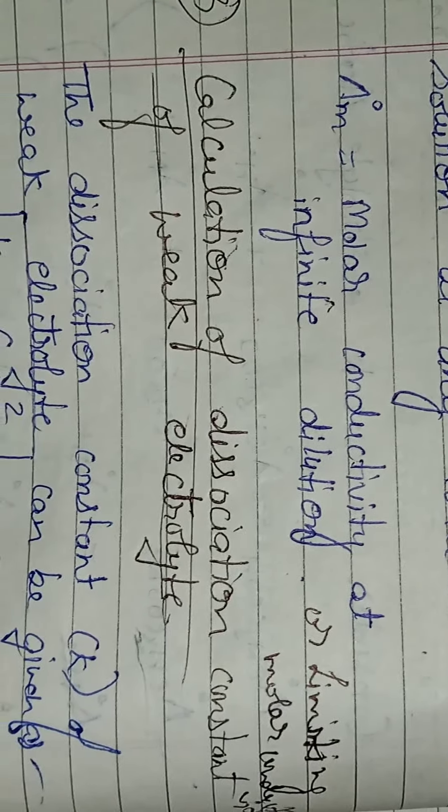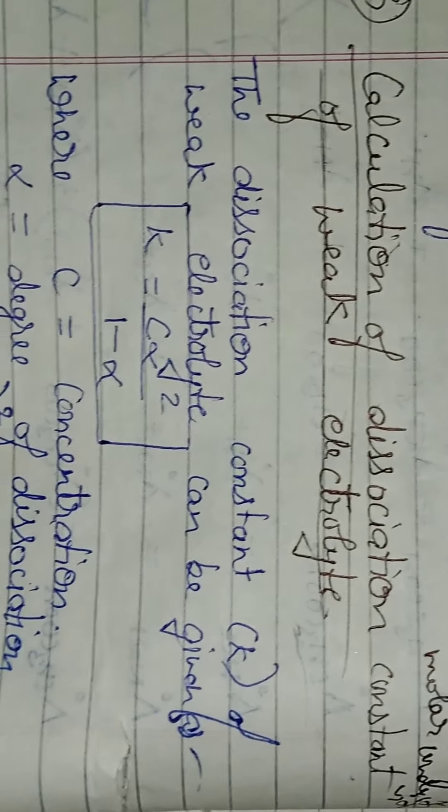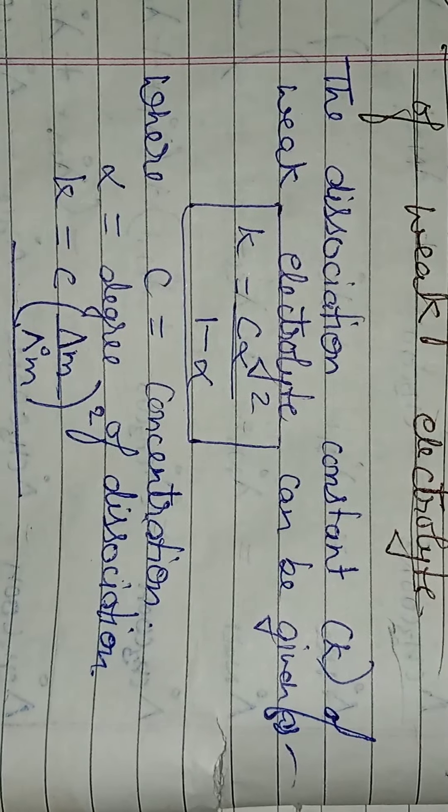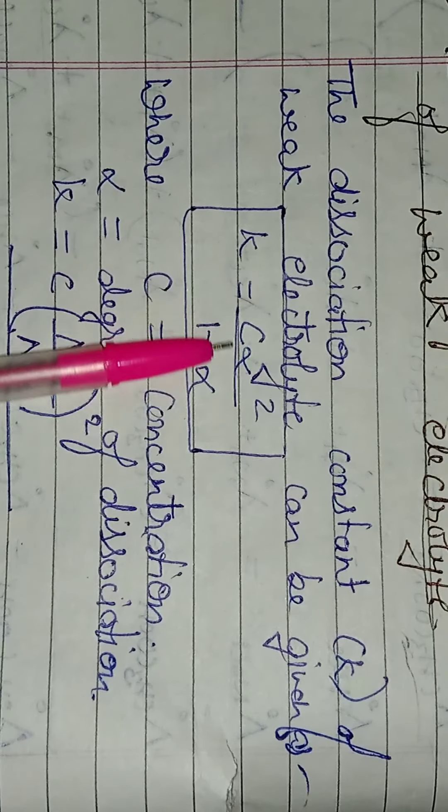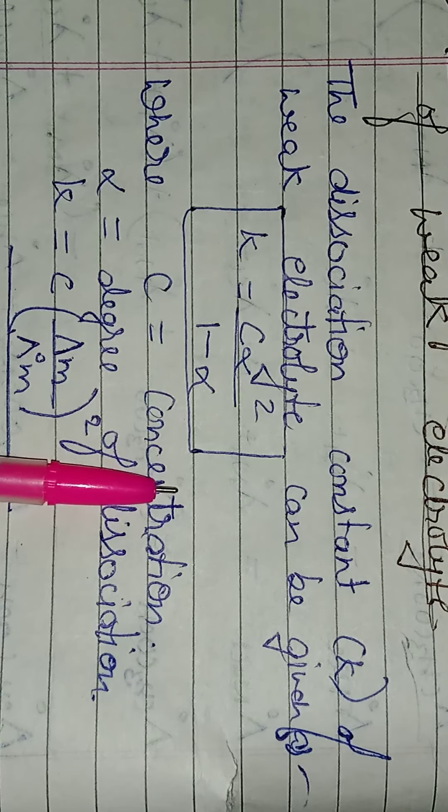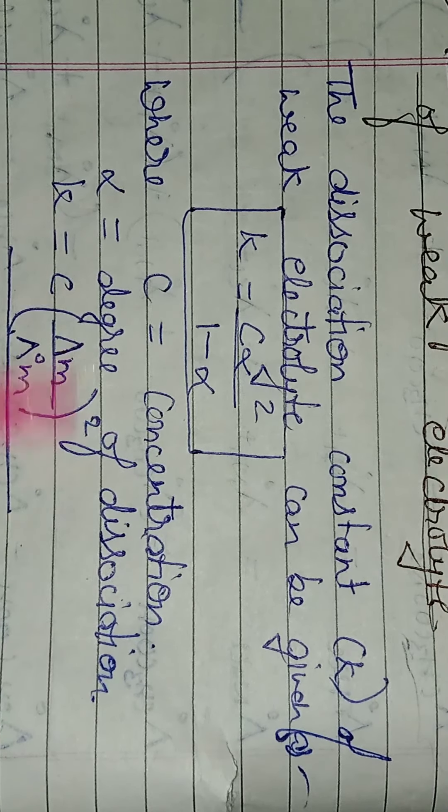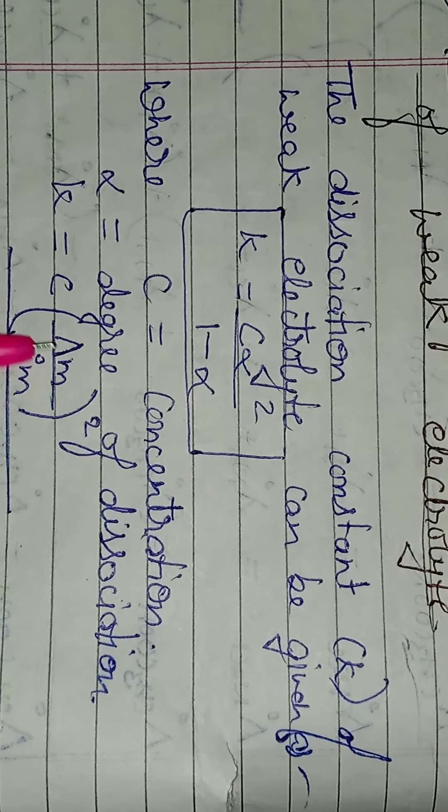Next is calculation of dissociation constant of weak electrolyte. The dissociation constant ko hum K se denote kar rahe hai, weak electrolyte ke liye, uska formula hai, K equals c alpha square upon one minus alpha. C hai concentration, alpha hai degree of dissociation. K kya ho jayega, yahan par, dekhiye, c alpha ki jagah, hum upar wala formula lagayenge, jo maine abhi aapko bataya tha, alpha ka.